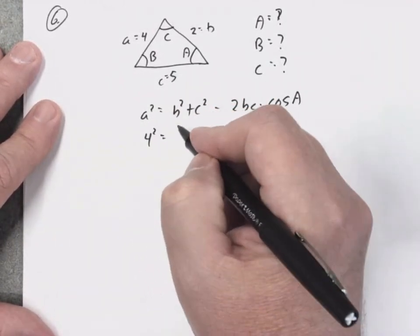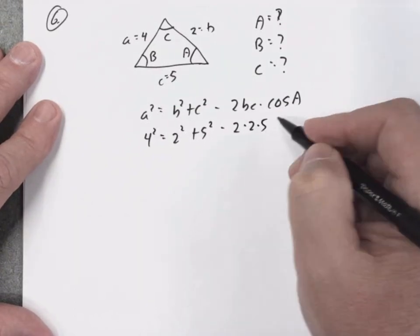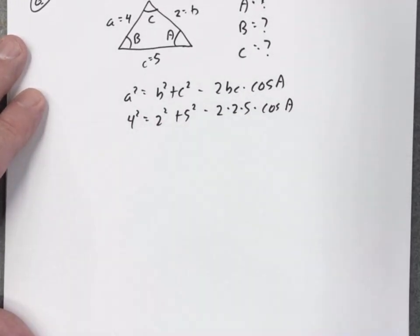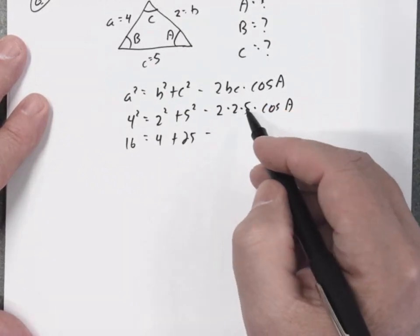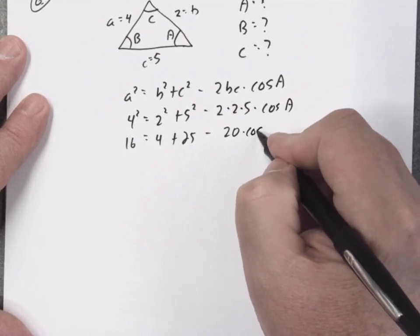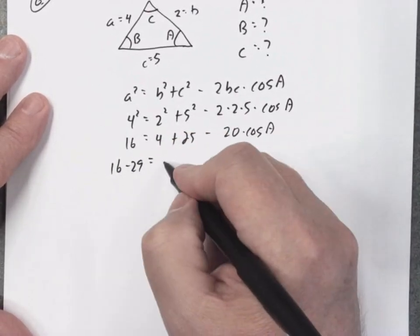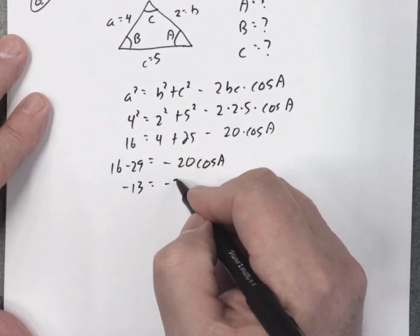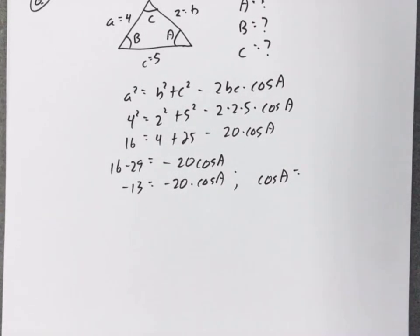I know everything except angle A, so I plug in: a is four, b is two, c is five. Two times two times five times cosine A. Be careful with the math: 16 equals 4 plus 25 minus 20 cosine A. That gives 16 equals 29 minus 20 cosine A. Subtracting 29 from both sides: negative 13 equals negative 20 cosine A. So cosine A equals 13 divided by 20, which is 0.65.